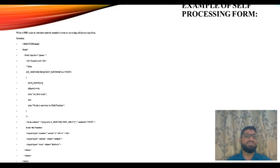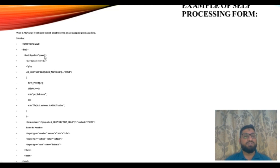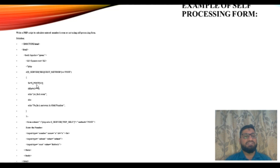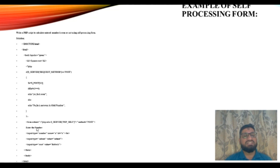Let's see an example of a PHP self-processing form that checks whether an input number is even or odd. We have taken HTML with a body background color of green, and an h1 tag. If $_SERVER['REQUEST_METHOD'] equals POST, we take variable $a equal to $_POST value. If $a mod 2 equals zero, that means the number is even; else the number is odd.